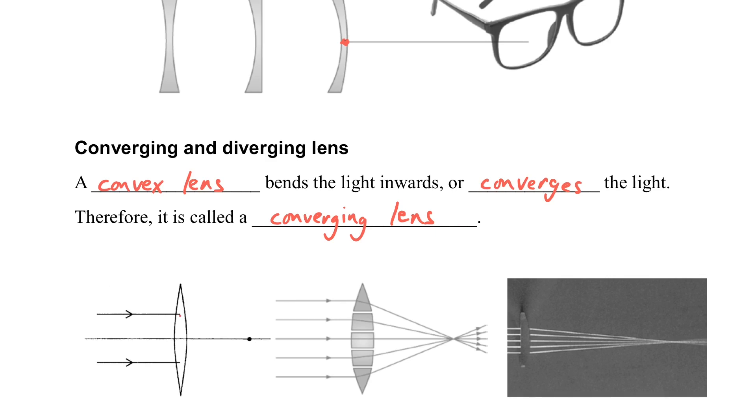For the convex lens, when light rays go directly to the lens, the light will merge together at the focus. So we call it converging lens because the light is converged by the lens.